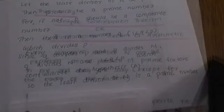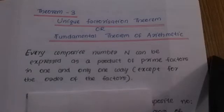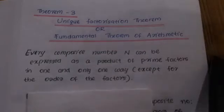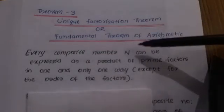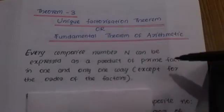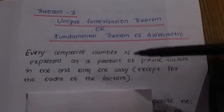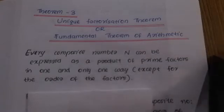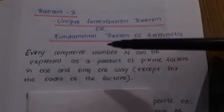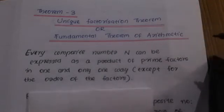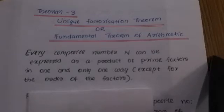Theorem 3 — an important theorem: the Unique Factorization Theorem, also called the Fundamental Theorem of Arithmetic. Statement: Every composite number n can be expressed as a product of prime factors in one and only one way, except for the order of the factors.